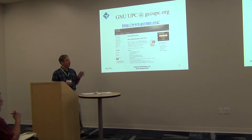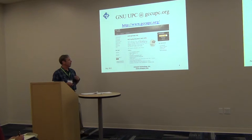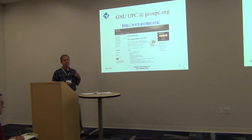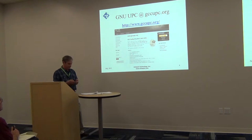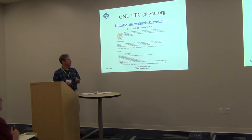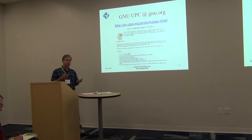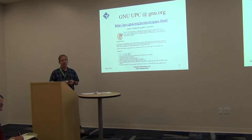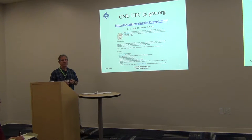There are two primary web presences for GNU UPC. One is gccupc.org, which is the place to go for the latest source code release downloads and information on how to build and install the product. There's also a GNU.org project page with pointers to things like the SVN repository. GNU UPC is implemented as a branch of GCC's SVN repository and has been in place since about 2010.